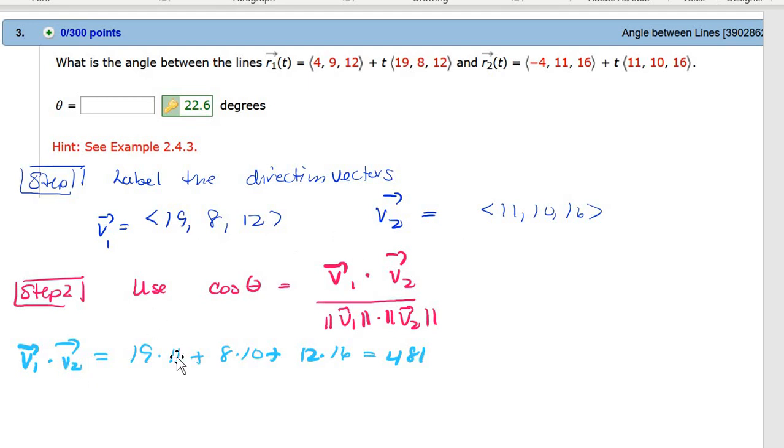And the dot product of two vectors is a number. And so you take 19 times 11, 8 times 10, and 12 times 16, and then you get 481. And then this is what we call the Euclidean magnitude. So it's the square of all these. It's like a size of a vector. 19 squared plus 8 squared plus 12 squared is a square root. And then square root that, that's the magnitude of V1.